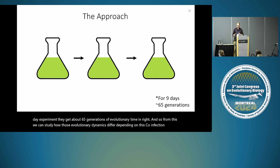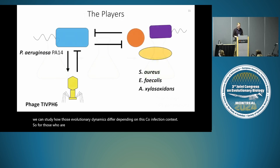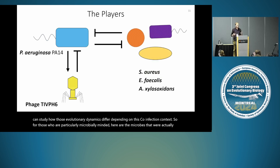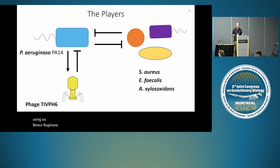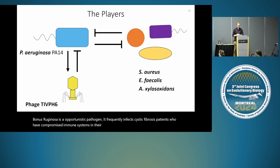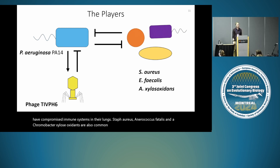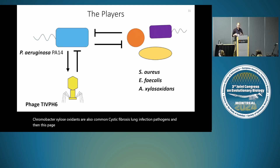For those who are particularly microbially minded, here are the microbes we're actually using. Pseudomonas aeruginosa is an opportunistic pathogen that frequently infects cystic fibrosis patients who have compromised immune systems in their lungs. Staph aureus, Enterococcus faecalis, and Achromobacter xylosoxidans are also common cystic fibrosis lung infection pathogens. The phage we're using specifically targets the Pseudomonas aeruginosa.